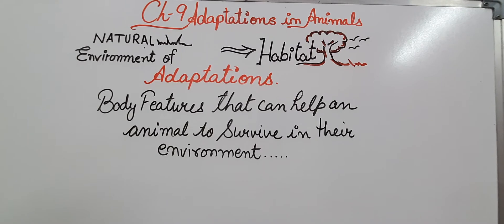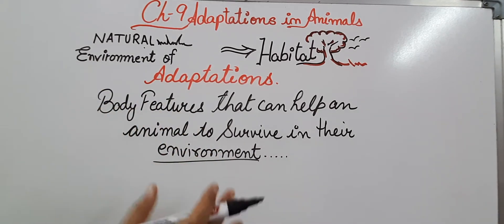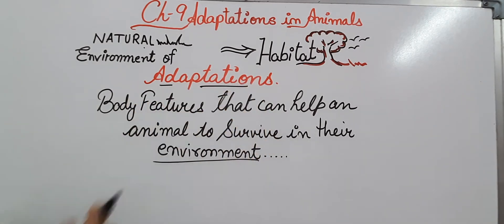Animals that are able to adapt themselves in their environment are able to survive. And if they cannot fit themselves in the environment, they cannot survive. So adaptation basically helps the animal to survive in the particular environment, or we can say that the body features developed by any animal to survive in that environment are known as adaptations.